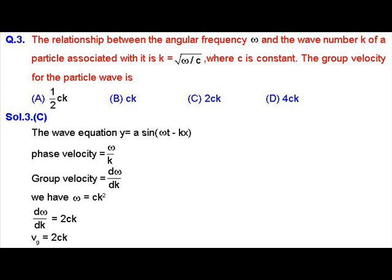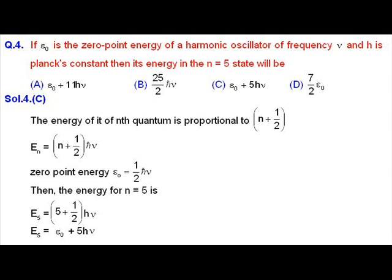MCQ question number three. The relationship between angular frequency ω and wave number k is given as k = √(ω/c), where c is a constant. We know the wave equation is y = A sin(ωt − kx), phase velocity is ω/k, and group velocity is dω/dk. From k = √(ω/c), we get ω = ck², so dω/dk = 2ck. Therefore, the group velocity v_g = 2ck. The correct answer is option C.